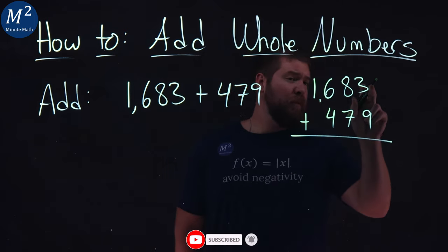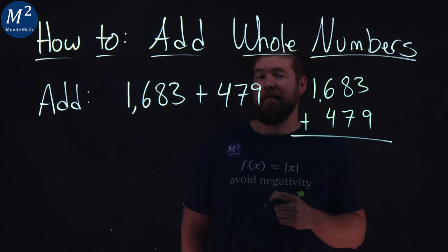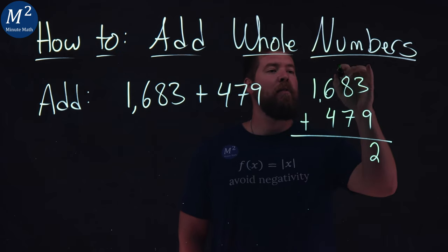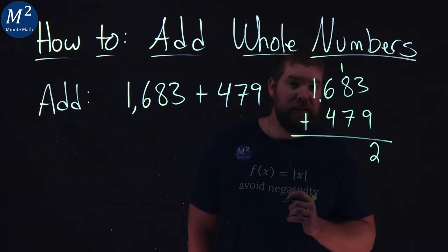Start with the ones digit, the ones place. 3 and 9 add to be 12, so we put a 2 here, this first digit of 12, and then the 1 goes up in the tens digits here.